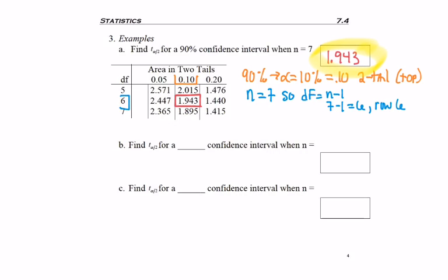And notice about the answer, my CV is always positive. CV for critical value. Critical values are always listed as a positive.